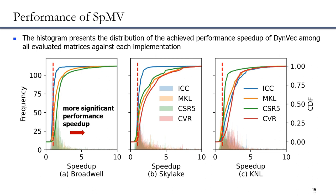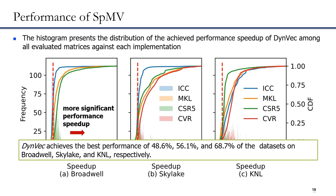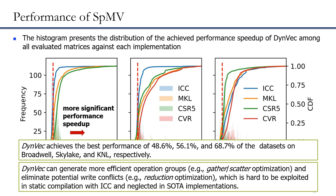The histogram represents the distribution of achieved performance speedup of DEMV among all evaluated matrices against each implementation. Bars located to the right of the red line, where performance speedup is larger than 1, indicate DEMV performs better than the compared implementation. A more significant performance speedup is indicated when bars are more concentrated to the right. DEMV achieves the best performance on 48.6%, 56.1%, and 68.7% of the datasets on Broadwell, Skylake, and KNL respectively. The reason DEMV achieves better performance is that it can generate more efficient operation groups and eliminate potential write conflicts, which are hard to exploit in static compilation with ICC and neglected in SOTA implementations.